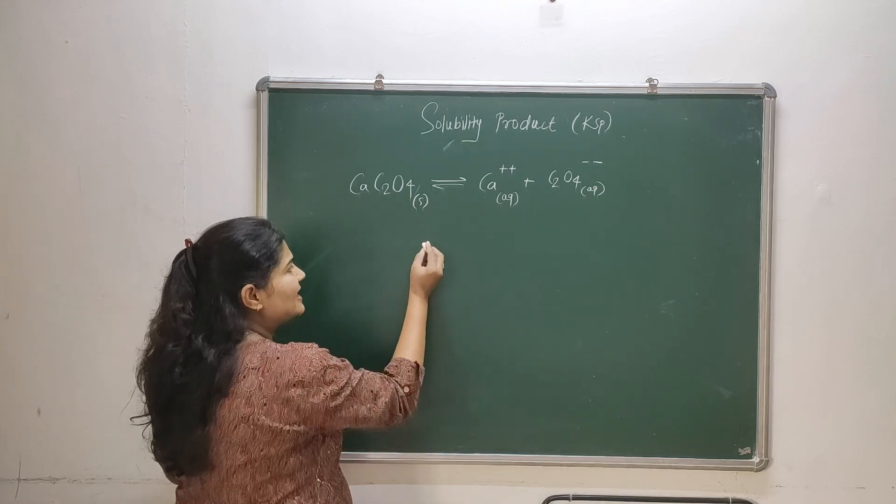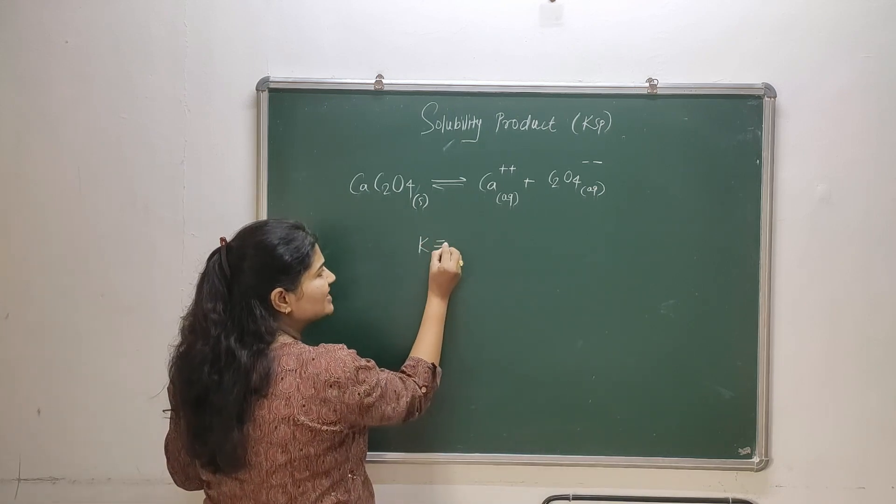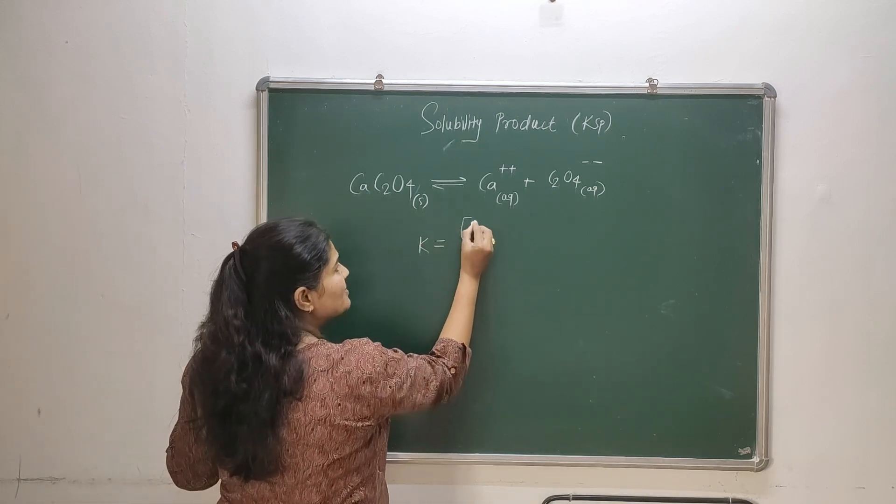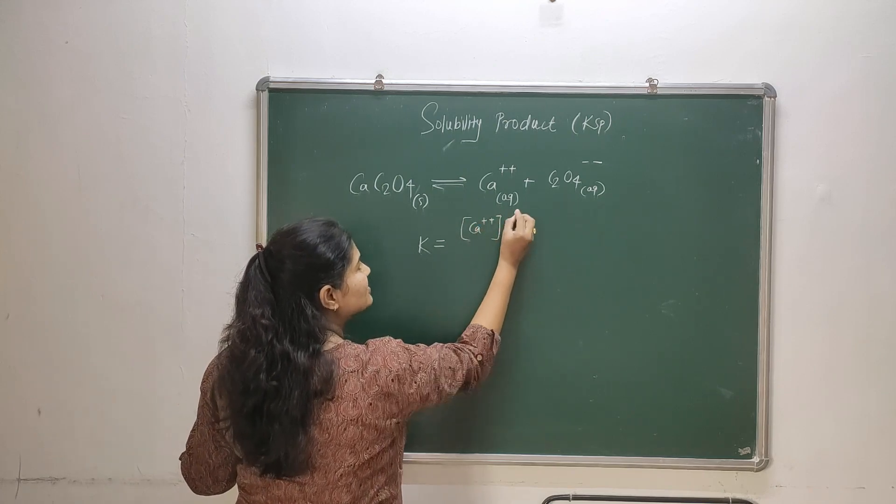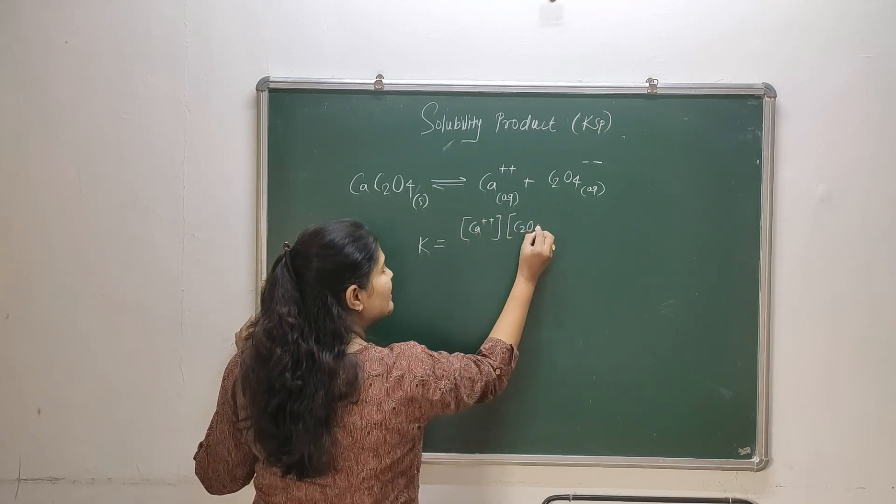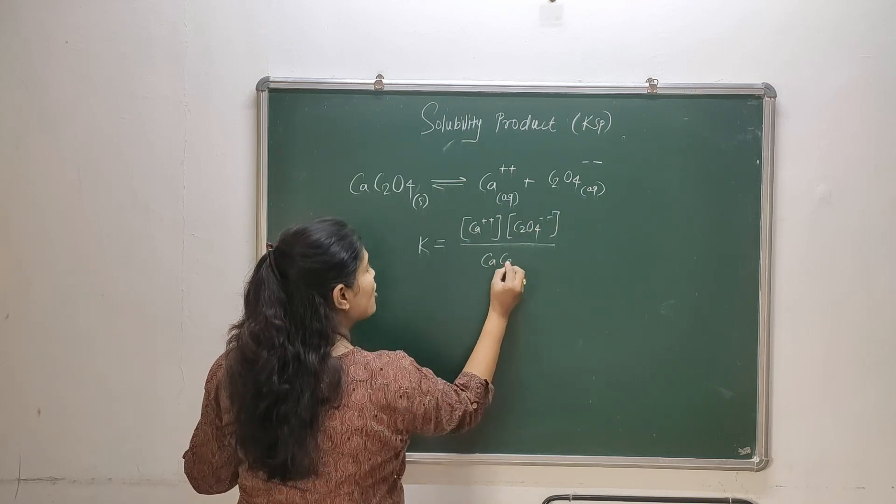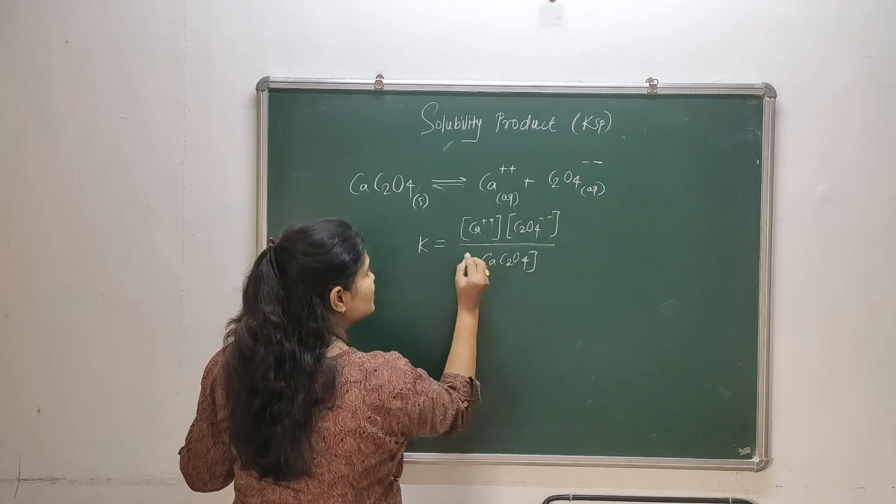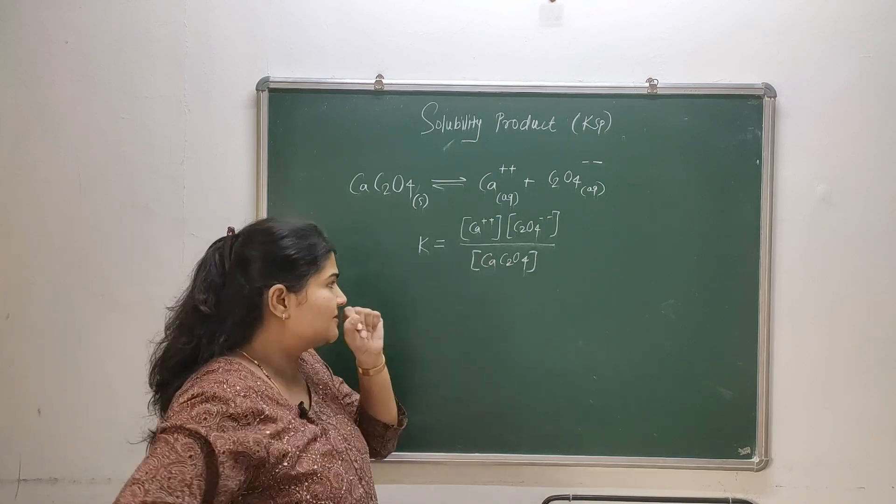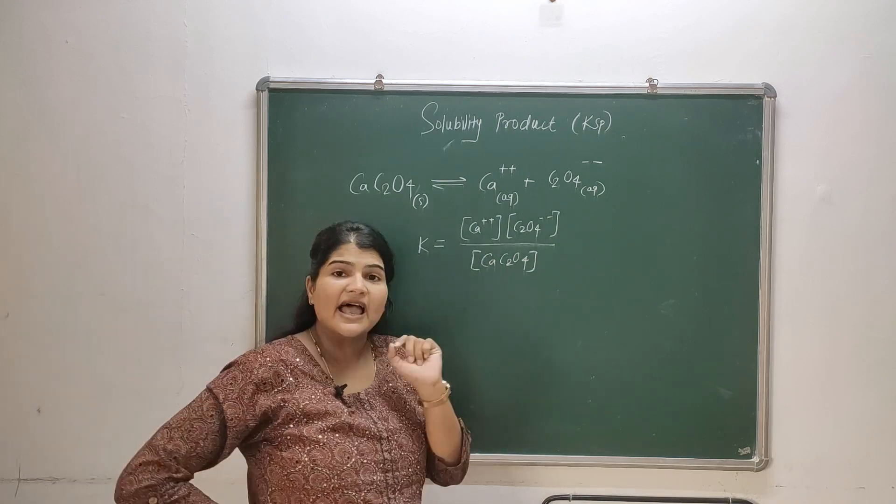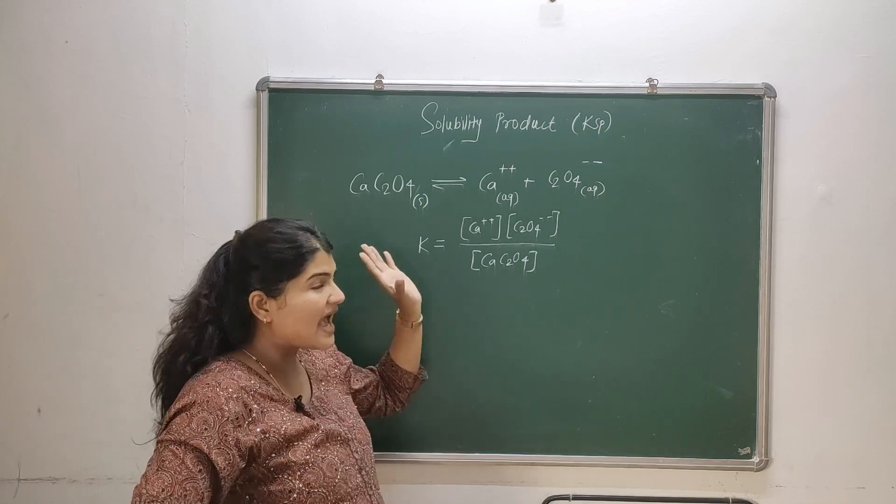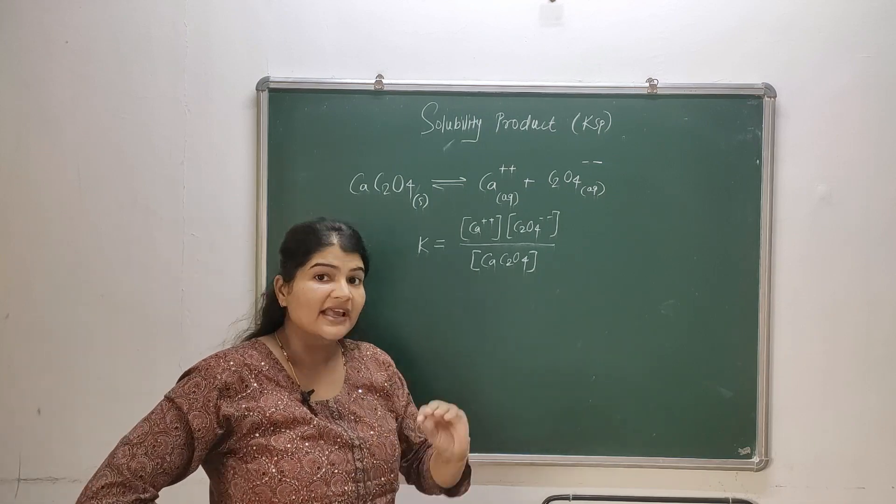So if I apply the law of mass action to this equilibrium, what I will get is calcium ion concentration into oxalate ion concentration divided by calcium oxalate concentration.